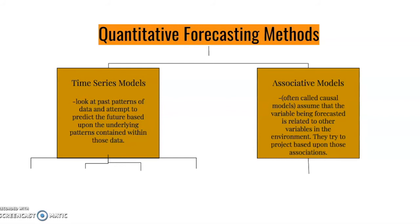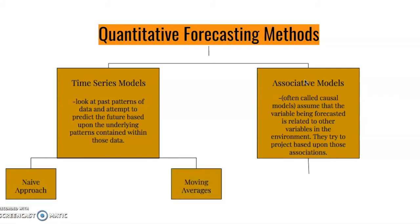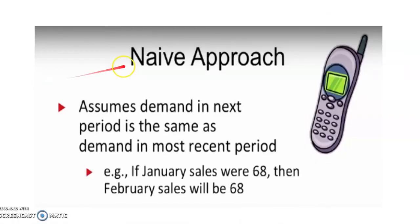When determining the quantitative approach to take, I'll go over at least three methods: the naive approach, moving averages, and linear regression. The naive approach assumes that the demand in the next period is the same as the demand in the most recent period. It uses last period's actual value as a forecast — for example, if January sales are 68, then the forecast for February would also be 68. The naive approach is very simple and easy to use.